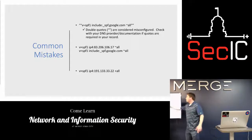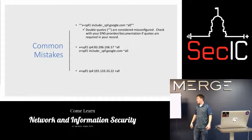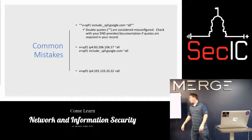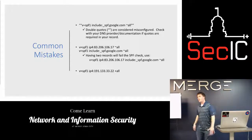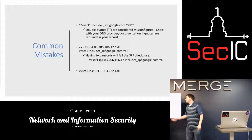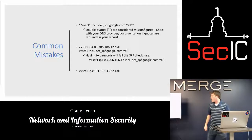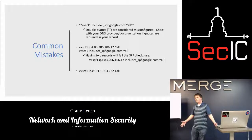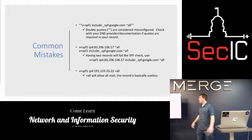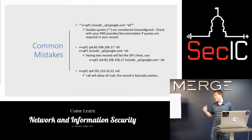The third mistake: does anyone see what looks funky? Using plus-all will allow any mail — the record is basically useless. If you're going to use plus-all, why even have the record? I've seen that a few times as well.